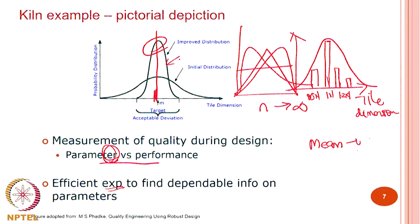That is all you need. For other distributions — for instance, what is predominantly called a log-normal distribution — there are other quantities called skewness and kurtosis. Skewness says how much it is skewed in one direction, and kurtosis is a fourth-order moment. Whereas for a Gaussian distribution, you need only the average — called the expected value or mean — and the standard deviation, which is represented by the notation sigma. One is the mean, usually represented by mu, and the other is standard deviation, usually represented by sigma. This is the notation we will use for the rest of the course.